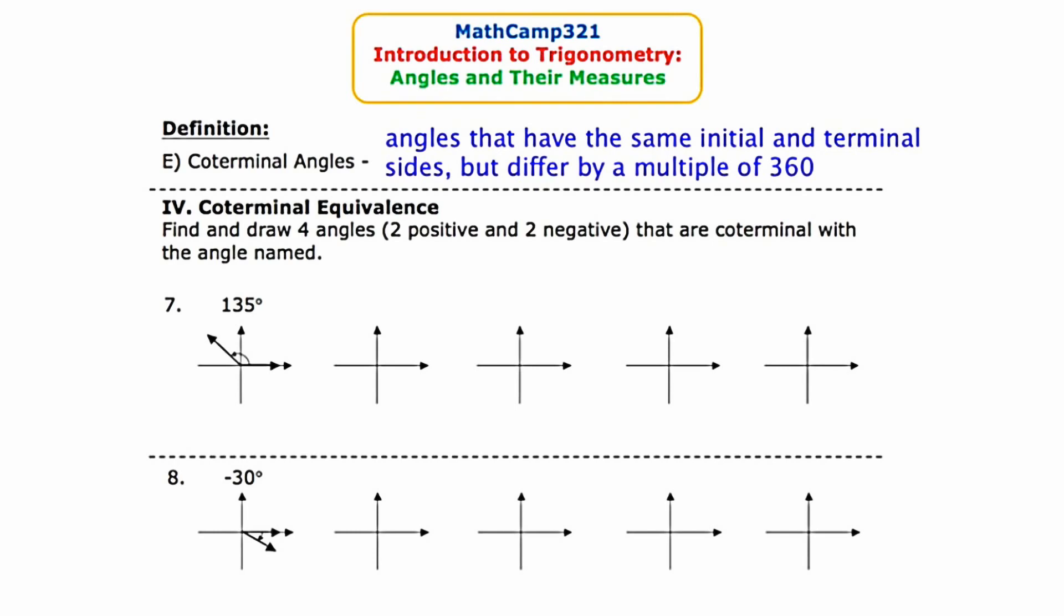In question number 7, we are given and shown a 135 degree angle, and I need to seek out four other angles that are coterminal with it. The first important thing to note is that the initial side and the terminal side of these four angles are going to look exactly the same as this 135 degree angle.